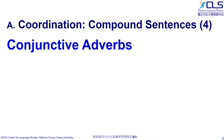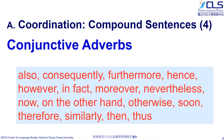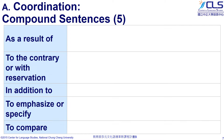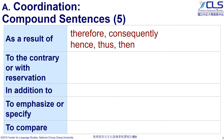Besides coordinating conjunctions, we can also use conjunctive adverbs to create compound sentences. Here is a brief list of conjunctive adverbs. We choose some of them to see how they work in a sentence. We use 'as a result' to point out causal relationships. So the phrase can be replaced by: therefore, consequently, hence, thus, and then.